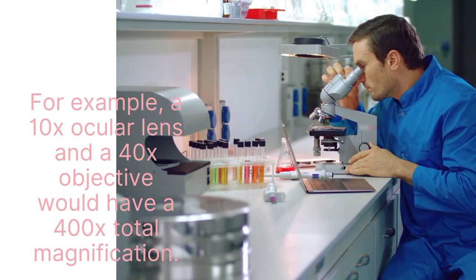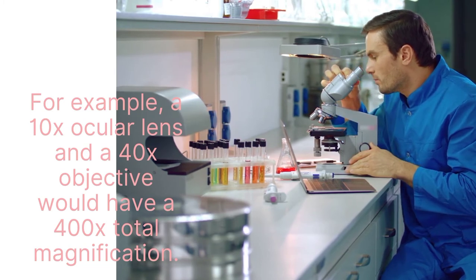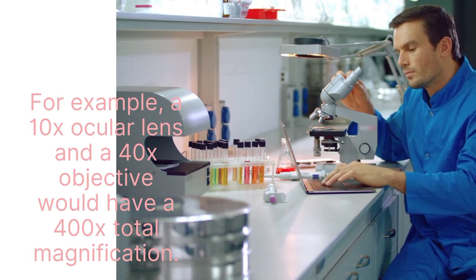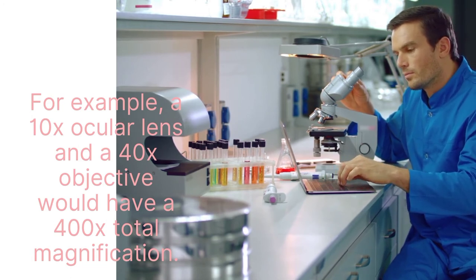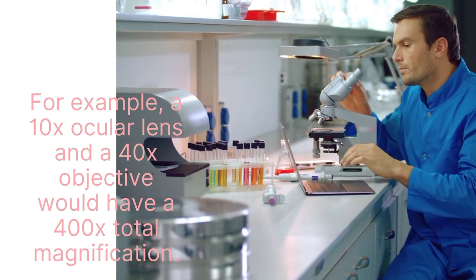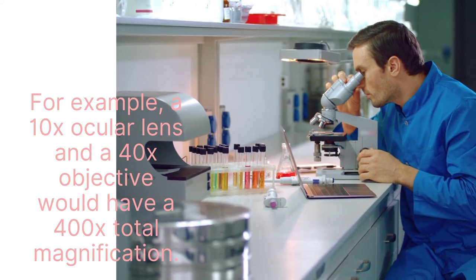To calculate the total magnification of the compound light microscope, multiply the magnification power of the ocular lens by the power of the objective lens. For example, 10x ocular lens and a 40x objective lens results in a total magnification of 400x.